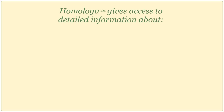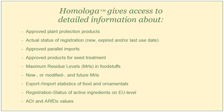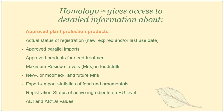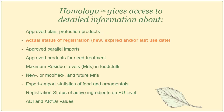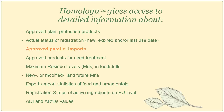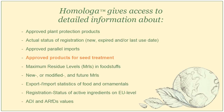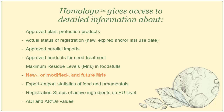The HOMOLOGA database gives you access to detailed information about approved plant protection products, the actual status of registration, new, expired and/or last use date, information about approved parallel imports, approved products for seed treatment, maximum residue levels, MRLs and foodstuffs, about new or modified and future MRLs.